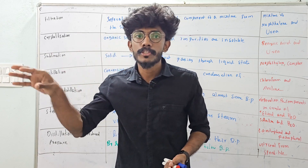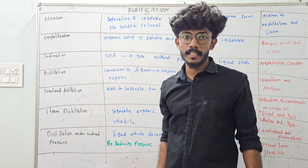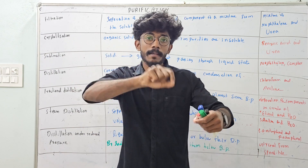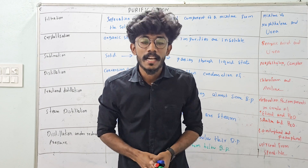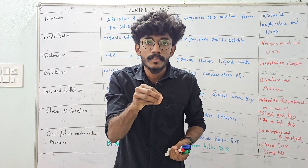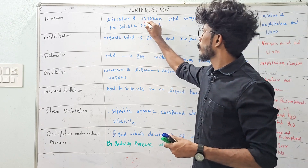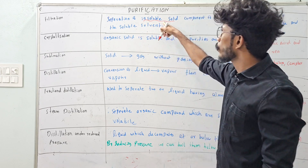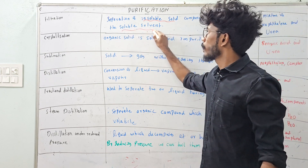We can purify the impurity. The first technique is filtration. You can use filtration when the mixture has an insoluble solid — that is the impurity — mixed with a soluble substance. It is a separation of an insoluble solid from a mixture using a suitable solvent.